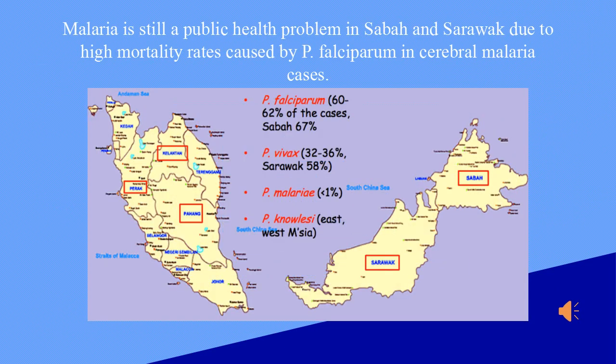Malaria is still a public health problem in Sabah and Sarawak due to high mortality rates caused by Plasmodium falciparum in cerebral malaria cases.